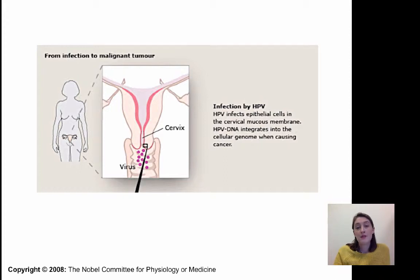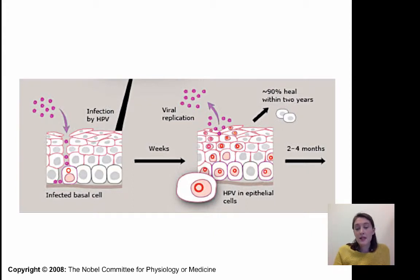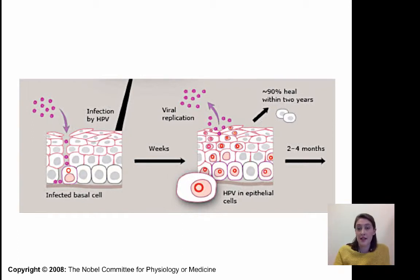How does HPV infection lead to cervical cancer? HPV is able to infect epithelial cells and the cervical mucosal membrane, causing an initial infection. The virus will replicate, actively growing and infecting cells, causing them to replicate the virus and spread. Typically, this initial infection will heal within two years and may or may not lead to genital warts. Usually, this initial infection goes undetected.